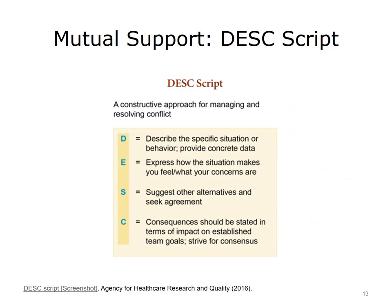Mutual support across a high-performing team is a skill that can be taught and learned. It would be nice if all teams were high performing and the journey was always smooth sailing, but we know that this is often not the case. Therefore, in the spirit of teaching and learning, a strategy that can be used within a team to engender mutual support when there is conflict is illustrated on the slide. In the TeamSTEPPS model, this is called the DESC script.